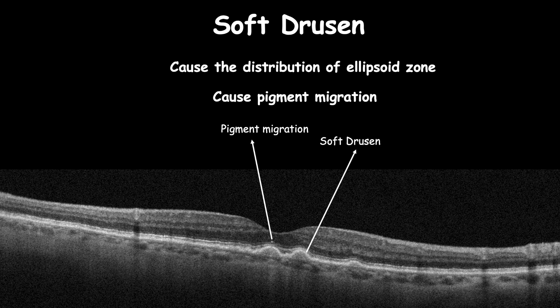Soft drusen can present with reduced vision and a risk of developing advanced or wet AMD. Therefore, close follow-up should be done along with systemic supplements, if the other eye has suffered from advanced AMD.